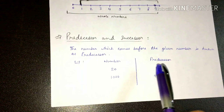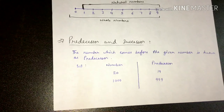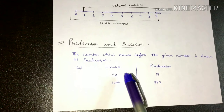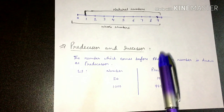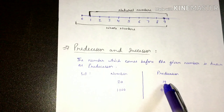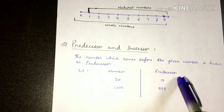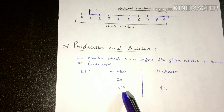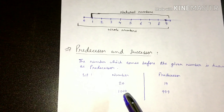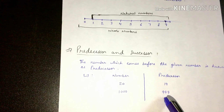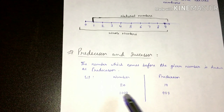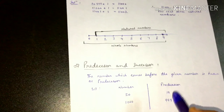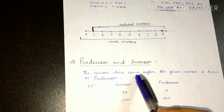Agar humein koi number given hai, jaise 20, toh uska predecessor kya hoga? Uska predecessor hoga 19 — ek number kam. Ya hum keh sakte hain ki agar hum us number mein se 1 subtract kar dein toh jo answer aayega woh predecessor hoga. Ek aur example: agar number hai 1000, toh predecessor kya hoga? Minus 1 karenge toh 999.